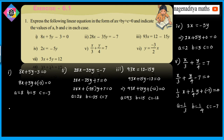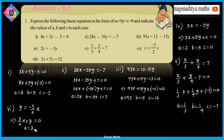Sixth problem: y is equal to minus 3 by 2 times x. Moving to the left hand side gives 3 by 2 times x plus y is equal to 0. Comparing with Ax plus By plus C equals 0, A is equal to 3 by 2, B is equal to 1, and C is equal to 0.